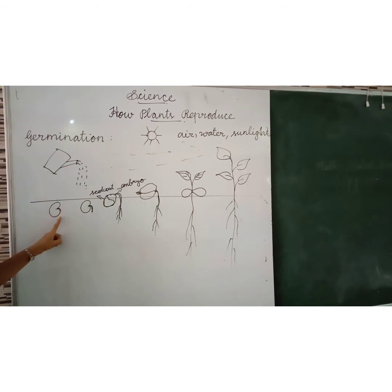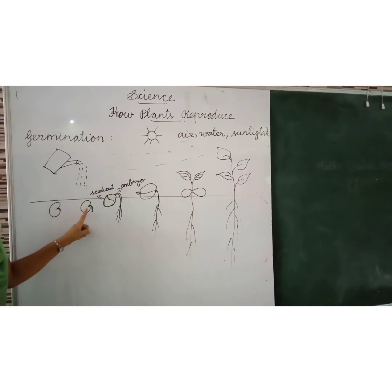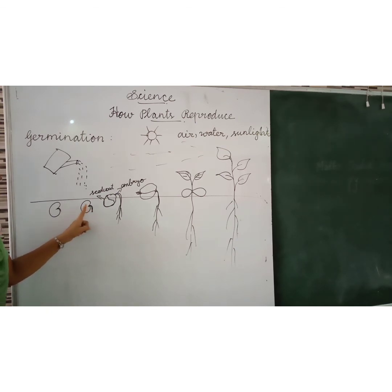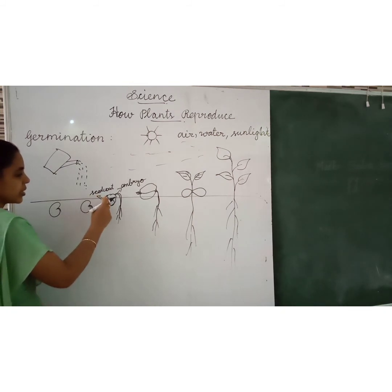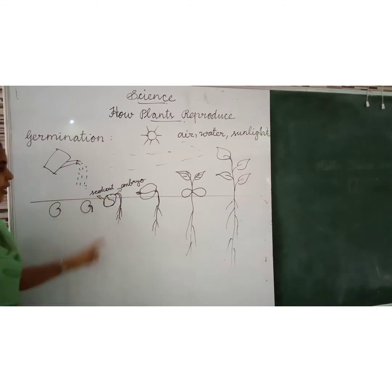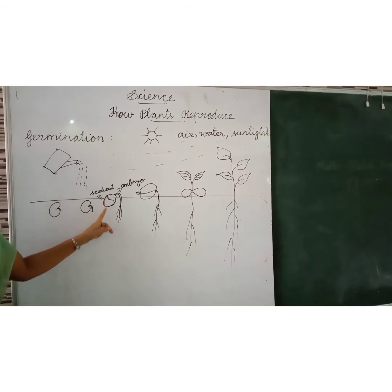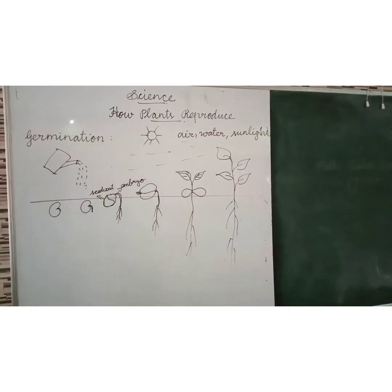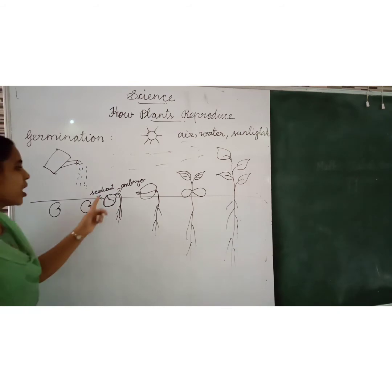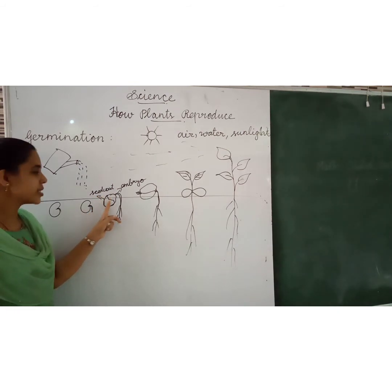After watering the seed, what will grow first? The root of the baby plant. The root of the baby plant will start to emerge. Then the seed coat — the outer covering of the seed — what is the seed coat? It is the outer covering of the seed.